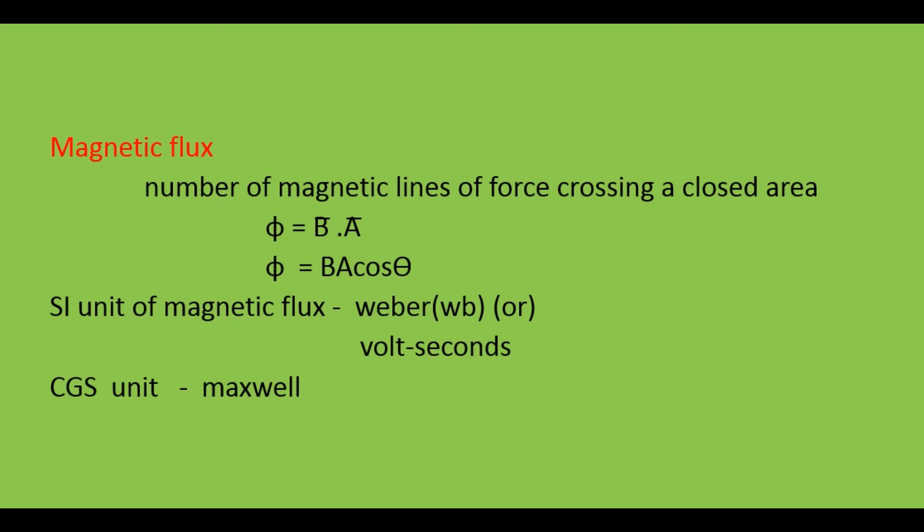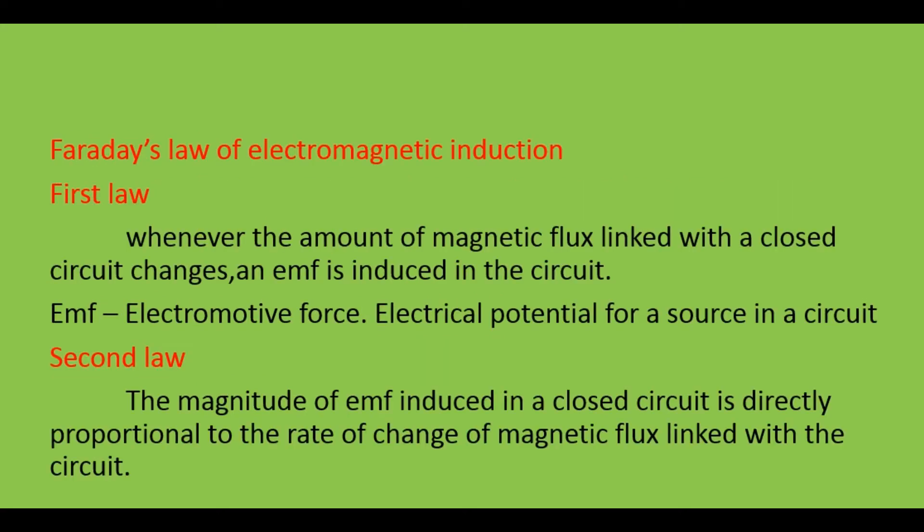The unit of magnetic flux is Weber or volt-second. In CGS units, the unit of magnetic flux is Maxwell. But in SI units, the unit of magnetic flux is Weber or volt-second. Next, Faraday's law of electromagnetic induction.